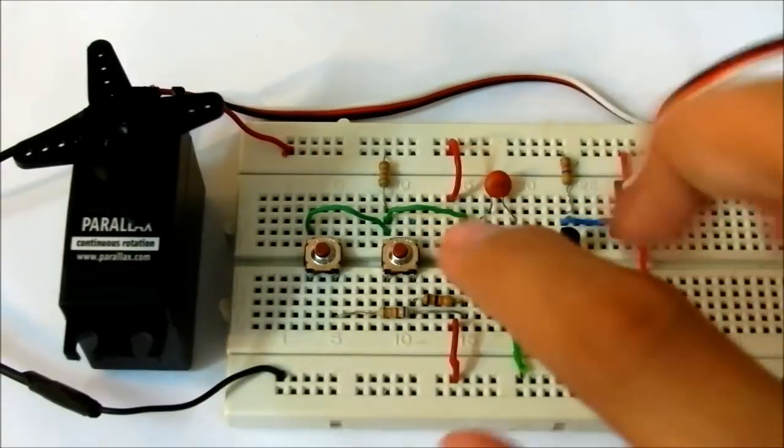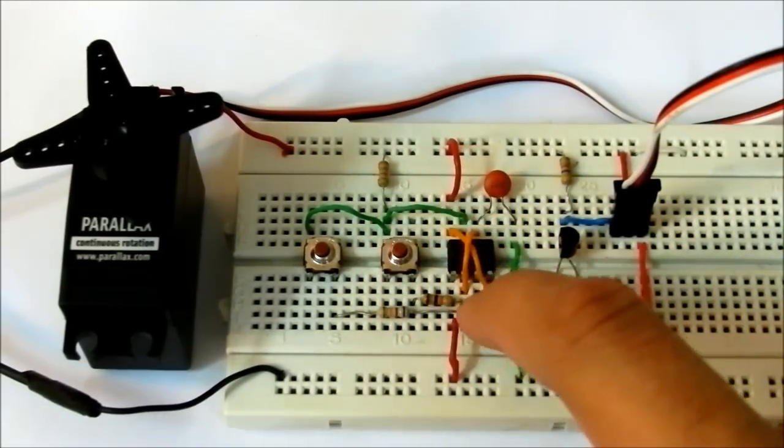To move the servo in clockwise direction, we use the push switch which is connected through this 10K resistor.